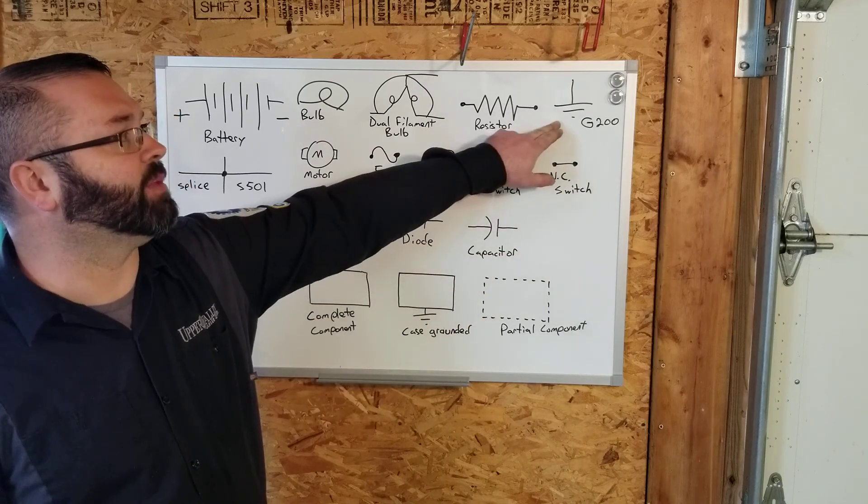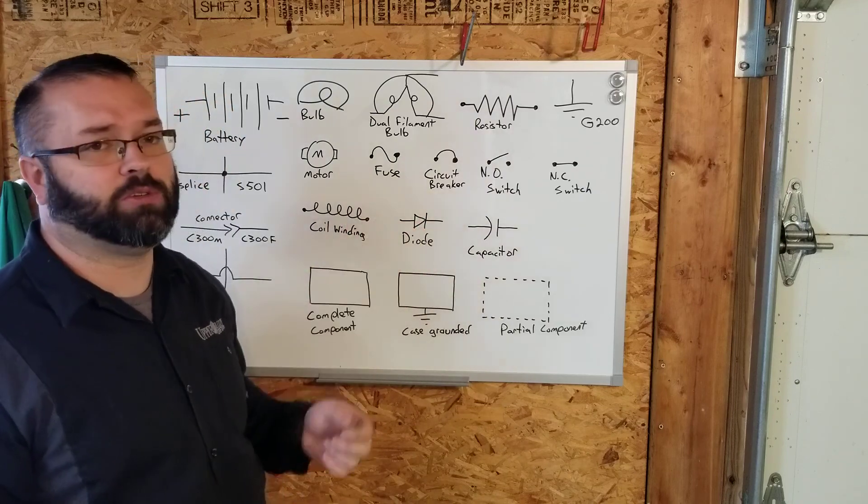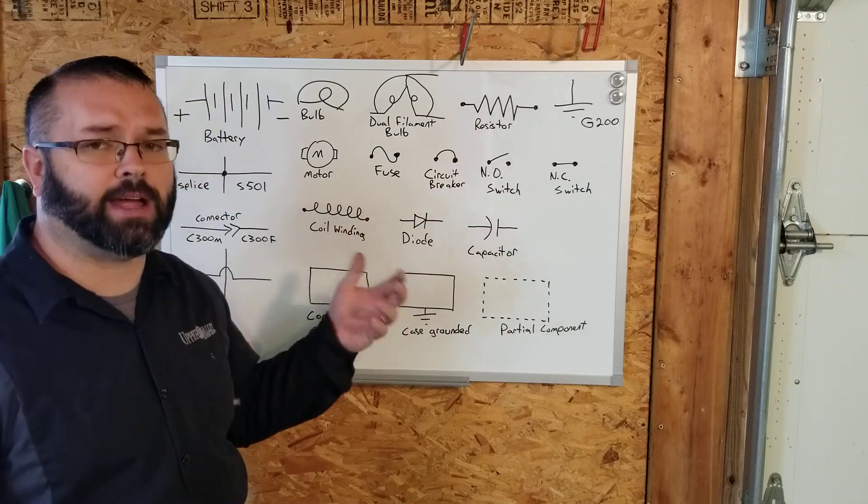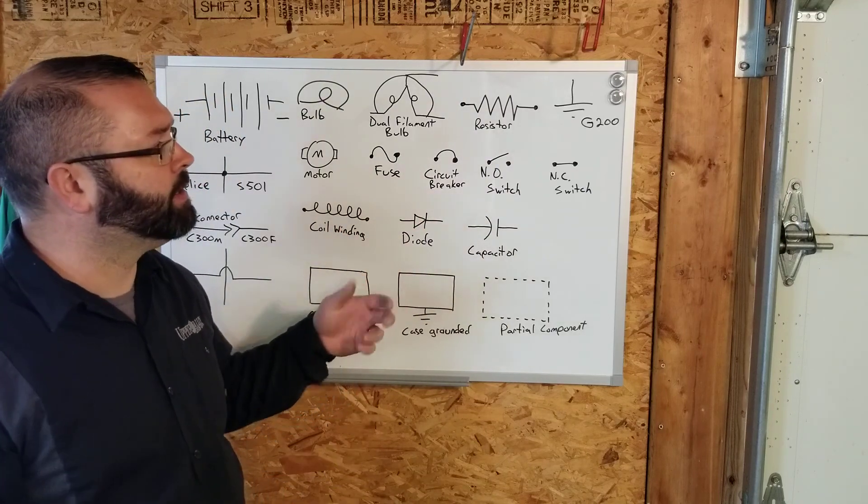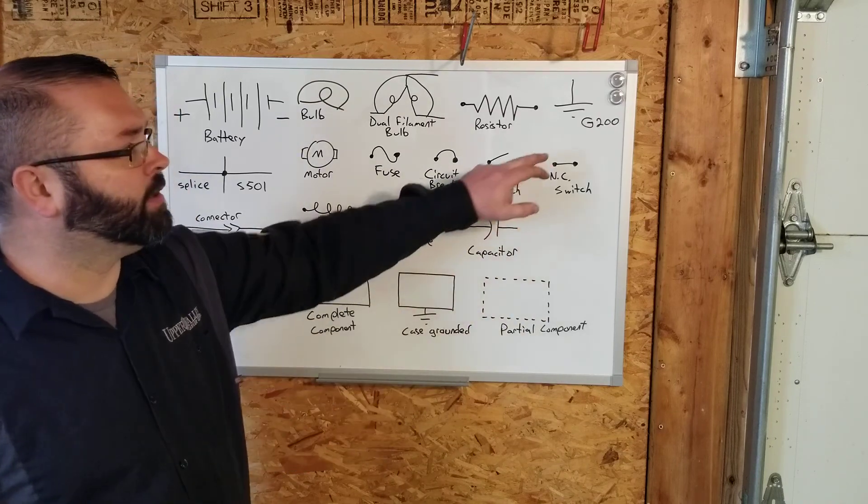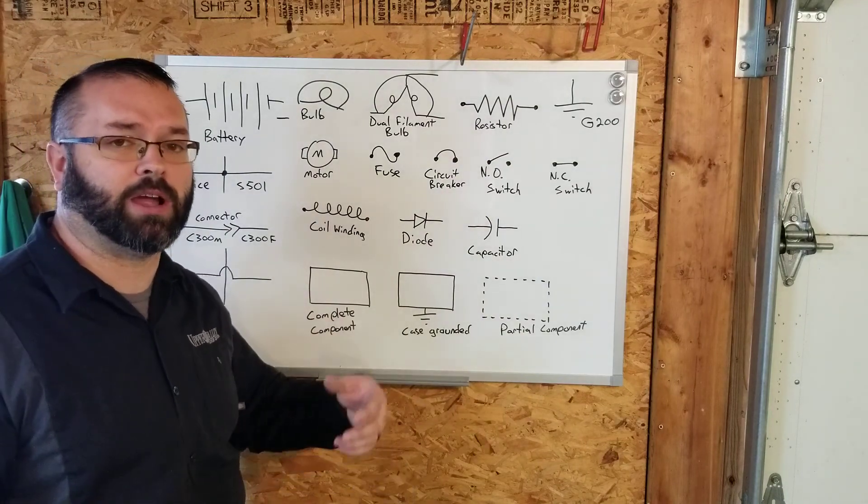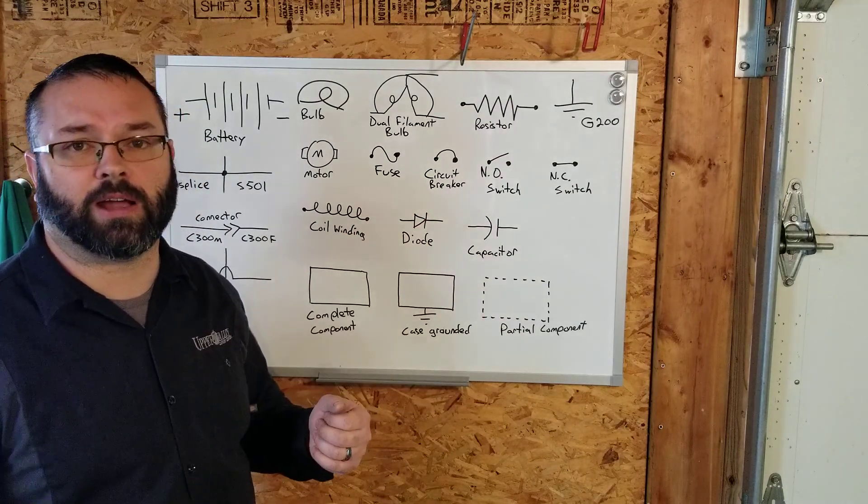Grounds. You guys remember the ground from the previous videos. If you see a number next to the ground, such as G200, in a diagram it tells you where that ground is. So if you're in AllData and you want to know where's the ground for this light bulb, you can say, okay, it's ground 200, and you can go to the component locator or ground locator. It'll tell you where that ground is.